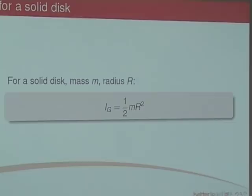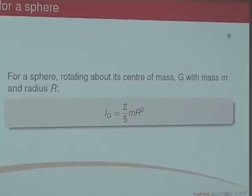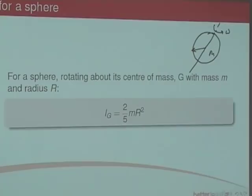For a sphere — this could be the Earth — spinning about an axis with mass M and radius R, the moment of inertia is 2/5 MR².